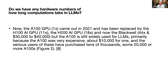So it's not super fast. The A100 GPU, which came out in 2021, we'll list as 1X. It has been replaced by the H100 AI GPU, which is 11 times the speed of the A100. The H200 AI GPU is 18X the A100. And now the Blackwell B100 is 44X, at about $30,000 to $40,000. The A100 is still widely used for large language models, primarily because it was very expensive at about $10,000 each, and serious users have purchased tens of thousands — some 20,000 or more A100s.